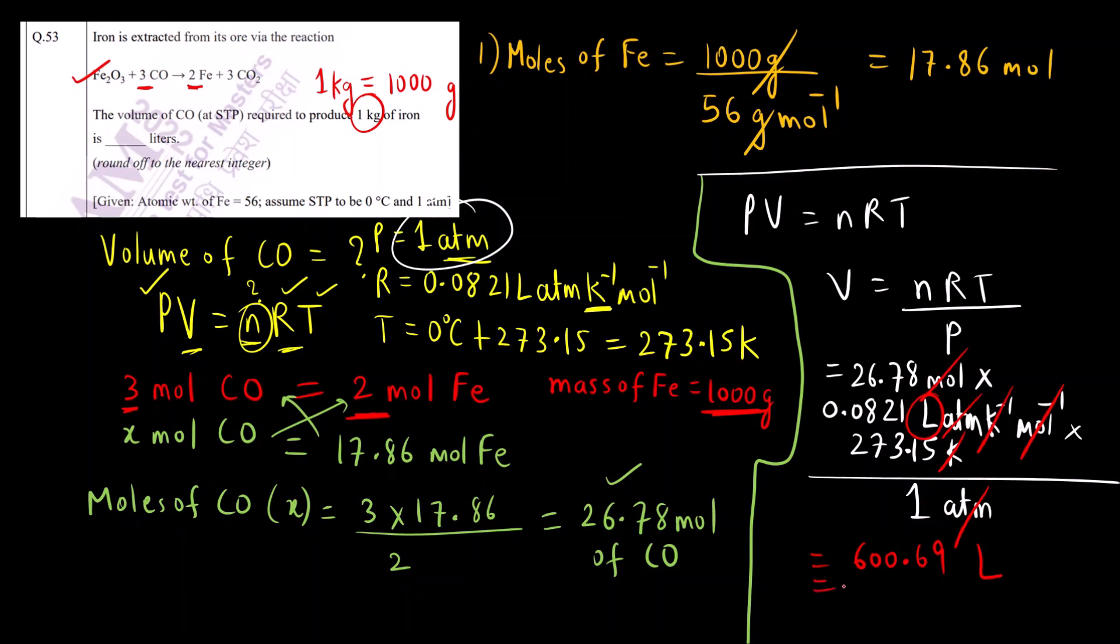How will you round off? First convert this into 600.7, and we want complete integers, so the final answer will be 601 liter. Our final answer is 601, no decimal, only 601 you have to enter. The answer key range they have given is 599 to 602. Our answer is correct, the unit is liter, volume of CO is 601 liter. I hope you have understood this solution. Thank you.